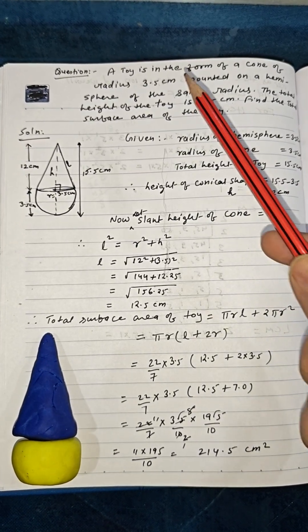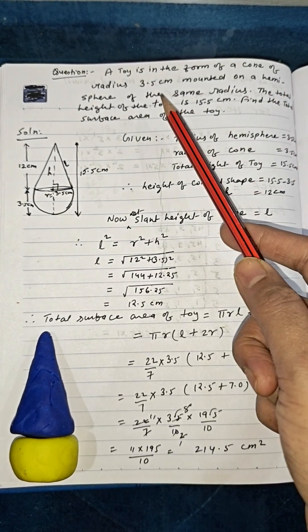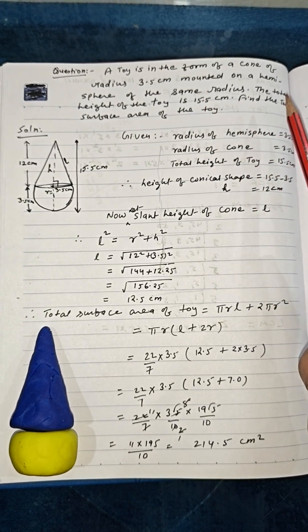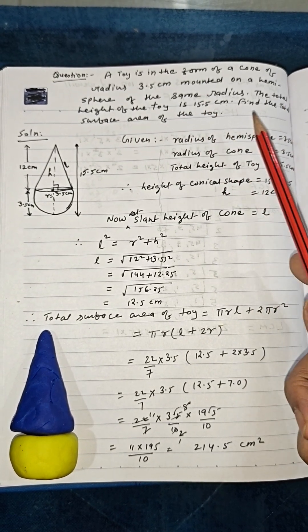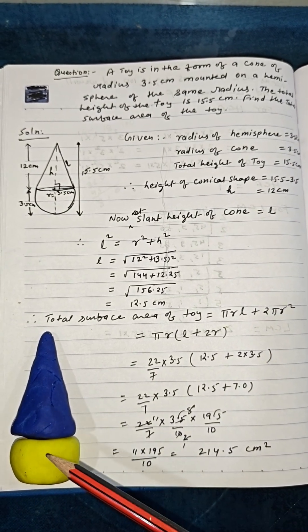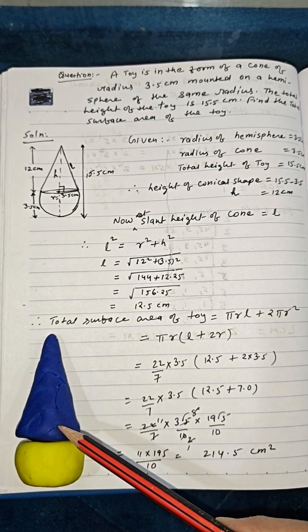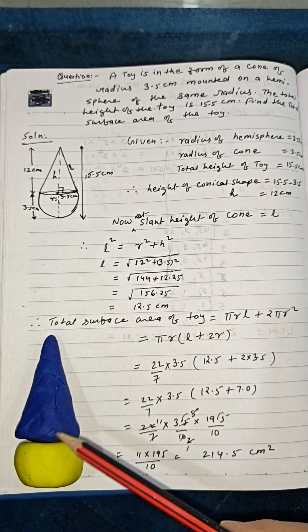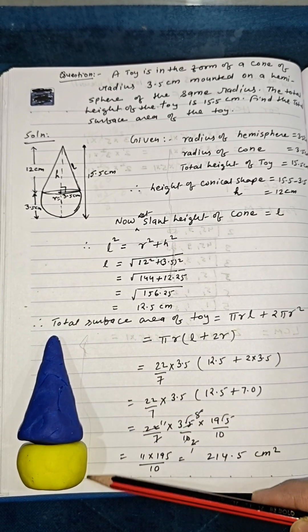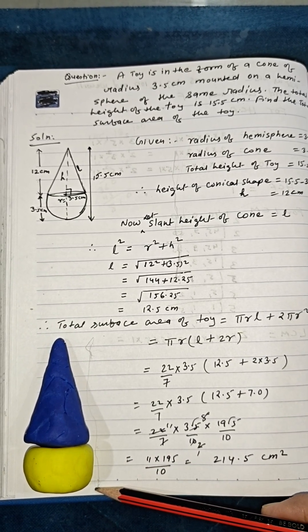Let us solve this problem in which a toy is in the form of a cone of radius 3.5 centimeters mounted on a hemisphere of the same radius. The total height of the toy is 15.5 centimeters. The toy has a hemisphere and a conical shape with the same radius, and the total height is 15.5 centimeters with radius 3.5 centimeters.